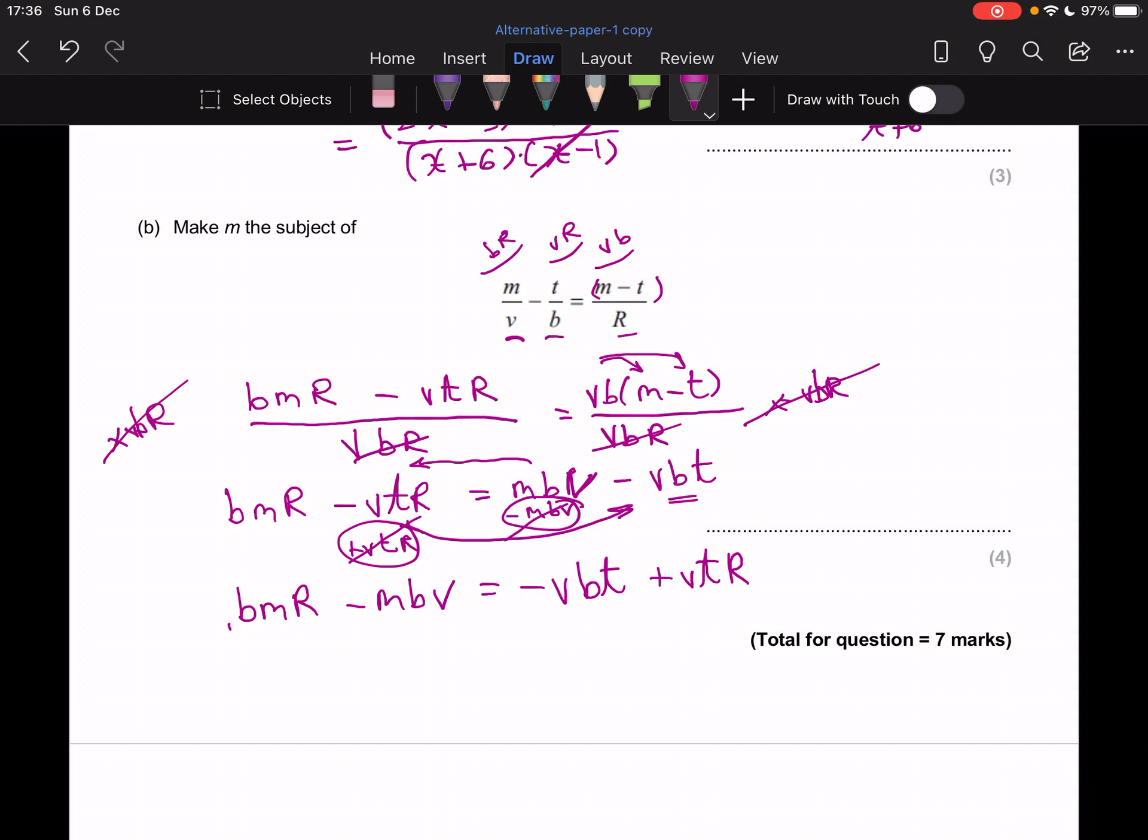So our M's are both on the same side. We take a common factor. And inside the bracket, we're going to have BR minus BV. And then on that side, I'm going to put my positive term first. So VTR minus VBT.